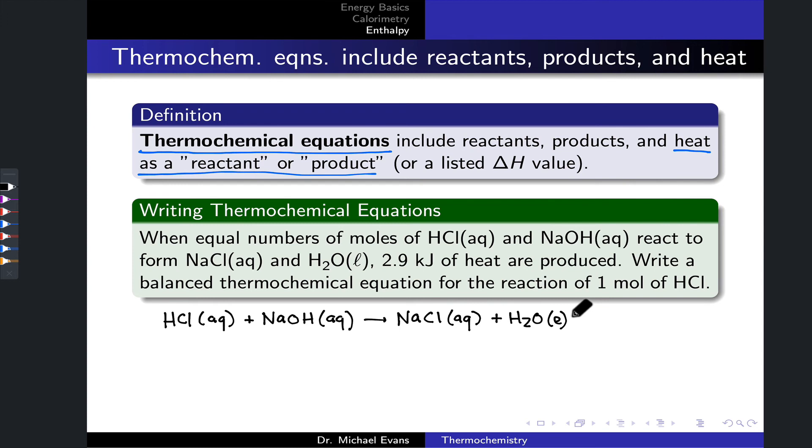We can tack on a delta H value, or we can incorporate the heat produced or consumed on either the product or reactant side, respectively. What the problem tells us is that 2.9 kilojoules of heat are produced in this reaction. Really quickly, pause the video.